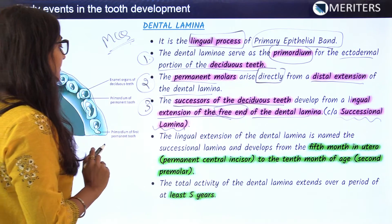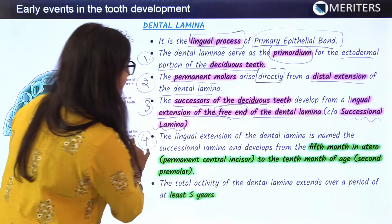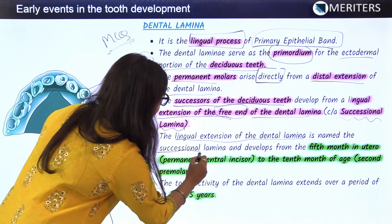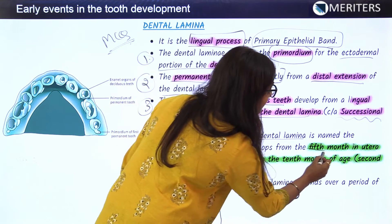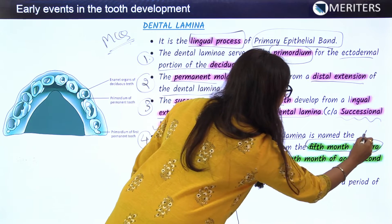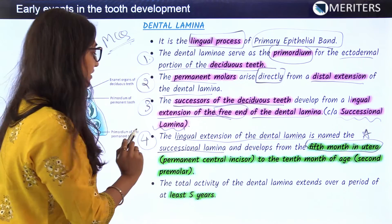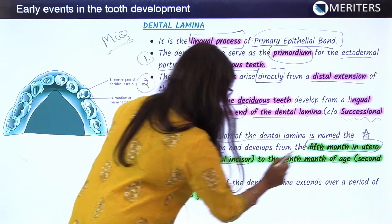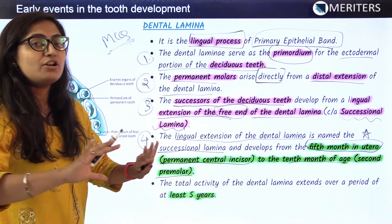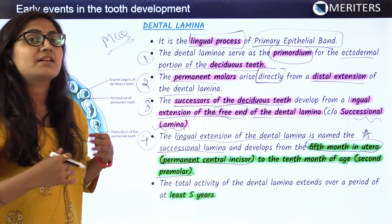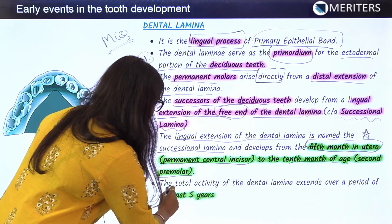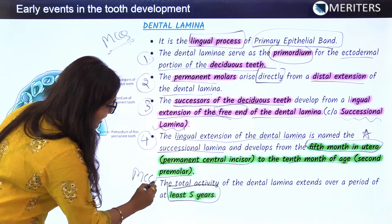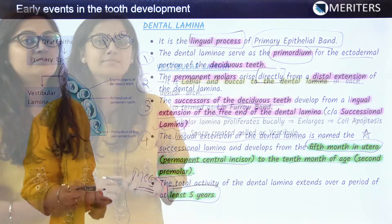The lingual extension of the dental lamina is named the succession lamina, and it develops from the fifth month in utero — for the permanent central incisor — through to the tenth month of age, for the second premolar. The time period of the successional lamina is at least five years. This is a key point which could be asked in MCQs.